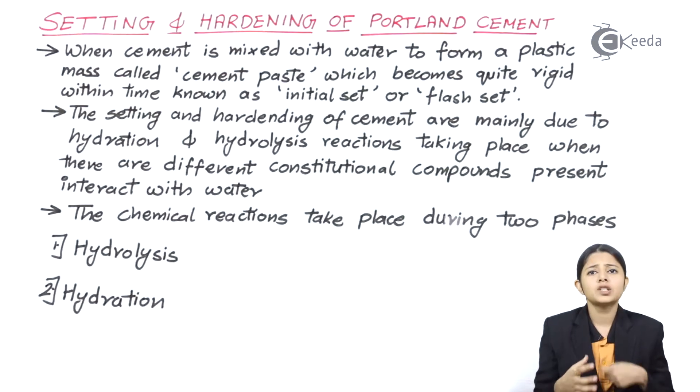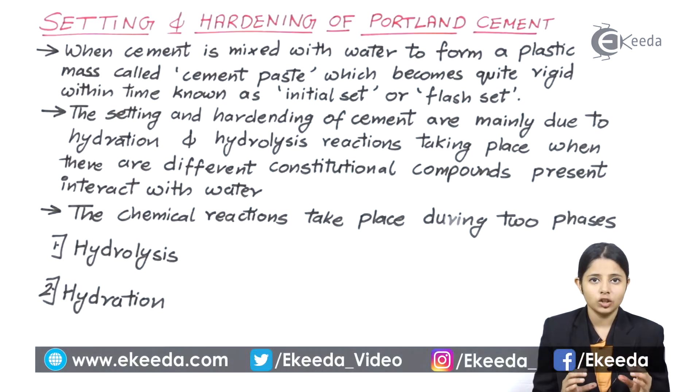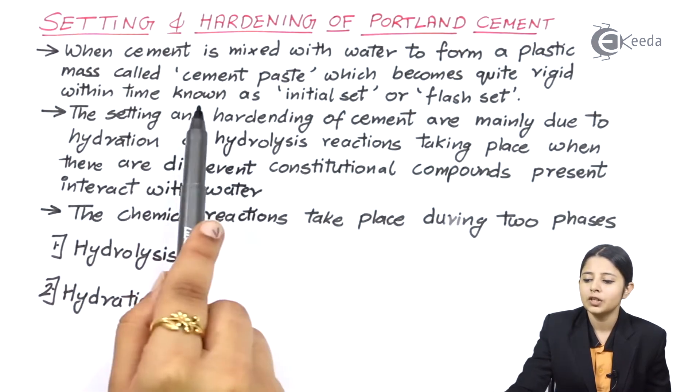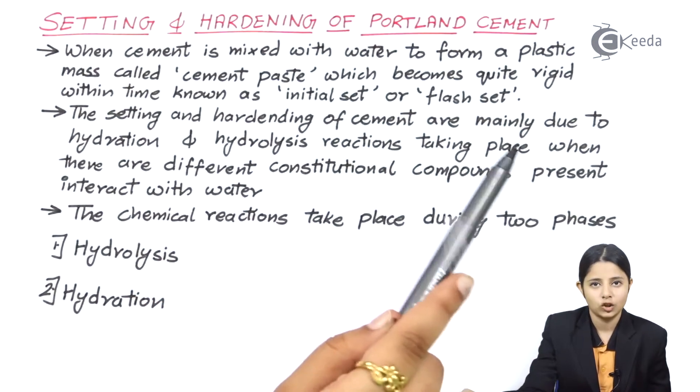These cements are mixed with water in equal proportions to form a paste-like structure. These pastes are then set for few days to harden. That hard structure forms the basis or foundation of any building or construction. The cement paste which becomes quite rigid with time is known as initial set or flash set.